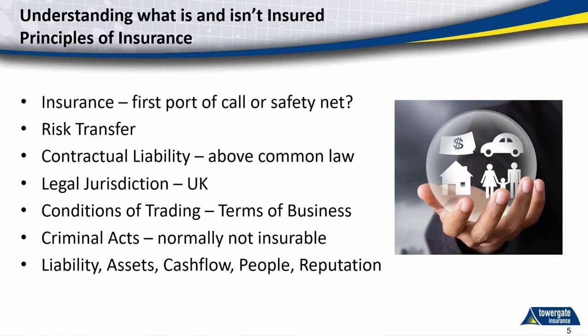A good way to look at how insurance is broken down is through five pillars: your liabilities, your assets, your cash flow, your people, and your reputation. Liability picks up public liability, employer's liability, products liability, and professional indemnity. Assets covers what you own — hired or owned plant, equipment, geophysical survey gear, laptops, cameras, and so on. Cash flow includes business interruption insurance. People covers personal accident, medical insurance, and employer's liability. Reputational liability is picked up by director's liability, management liability, professional indemnity, and cyber liability.